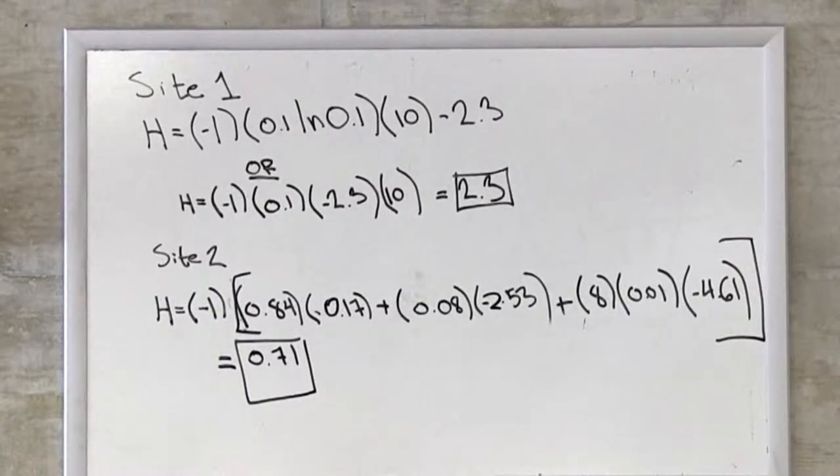So h equals minus 1 times 0.1 times ln of 0.1 times 10, which equals 2.3. Or h equals 1 times 0.1 times minus 2.3 times 10, which gives you the same value of 2.3.